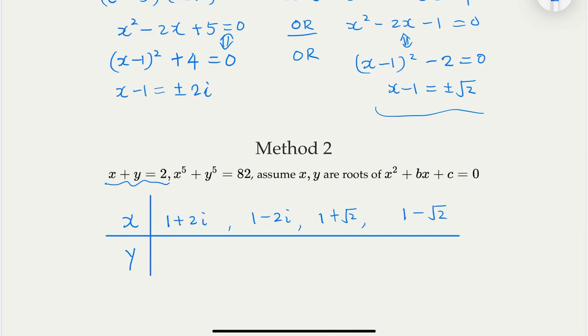What is corresponding y? y is 2, y equals 2 minus x. So in this case, 2 minus x, that becomes 1 minus 2i. For this one, it becomes 1 plus 2i. This one becomes 1 minus square root of 2. This is 1 plus square root of 2. All right, great. So they're symmetrical. x, y are kind of exchangeable here.